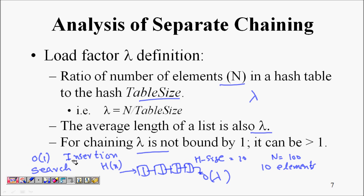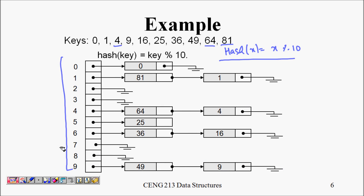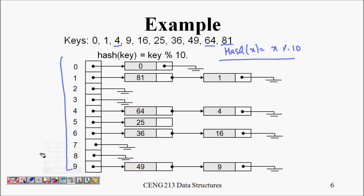Deletion also requires traversing the linked list. So the question arises: is separate chaining really useful? The problem is that it is no longer a simple data structure.